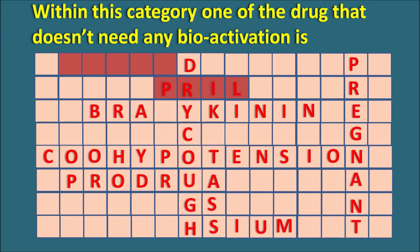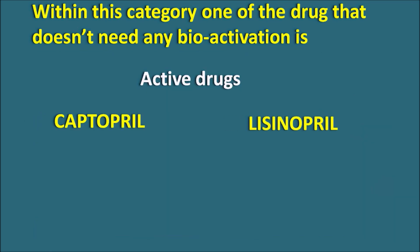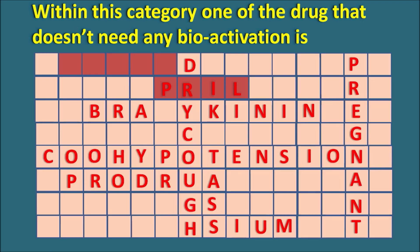Within this category, one drug that does not need any bioactivation — the ending is PRIL since all drugs in this category carry that suffix. We need to identify the drug that does not need bioactivation, with five blank spaces before PRIL. The active drugs within ACE inhibitors are captopril and lisinopril. Captopril has nine letters while lisinopril has ten, so captopril fits the given space. The right answer is captopril — it does not need any bioactivation because it is an active drug with a free carboxylic acid.